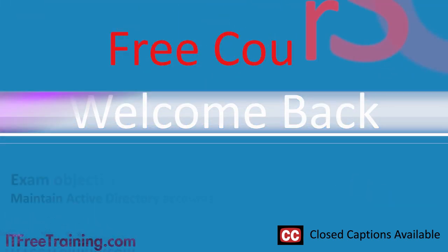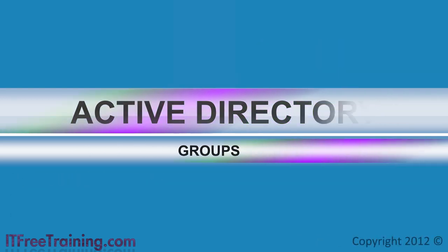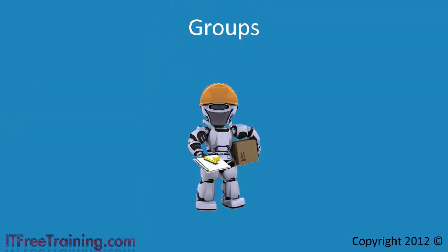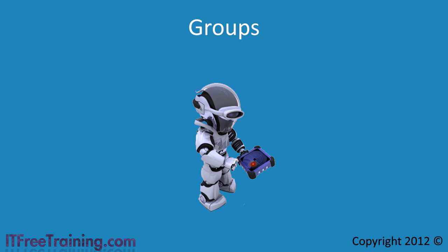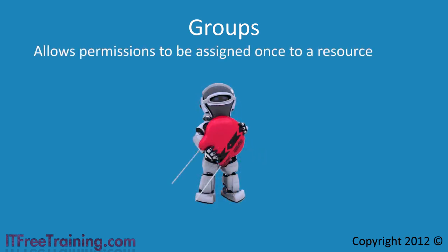Welcome to the next free video for the free Active Directory training course. This video looks at how groups work in Active Directory. In a changing environment, people come and go and roles change as companies restructure and people get promoted. Groups allow the administrator to assign permissions once to a resource and easily change who has access to that resource by changing the members in the group.